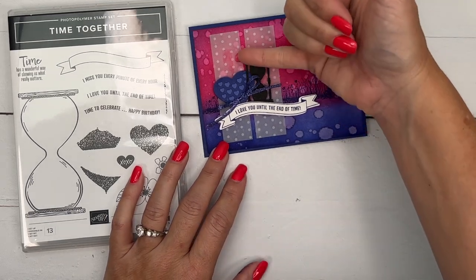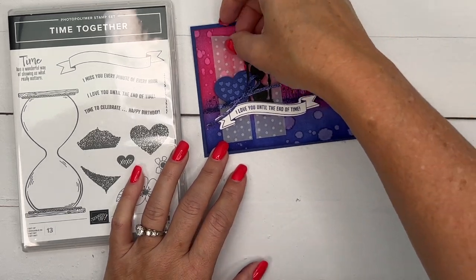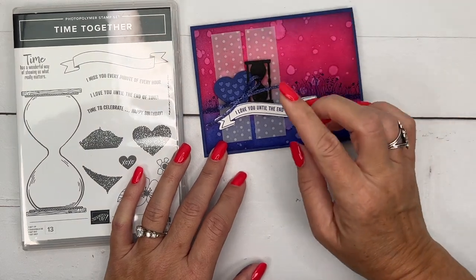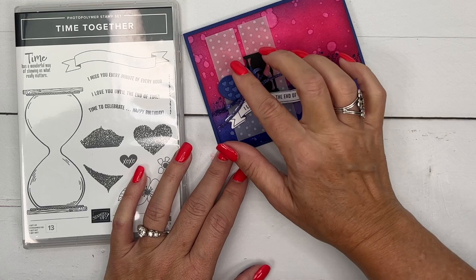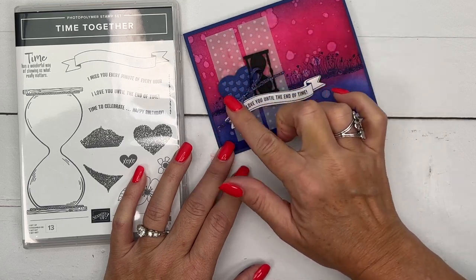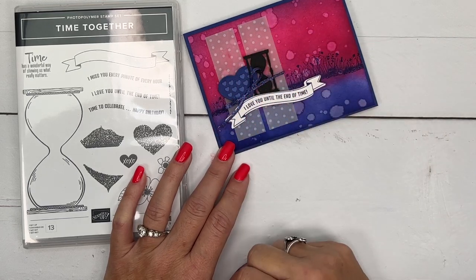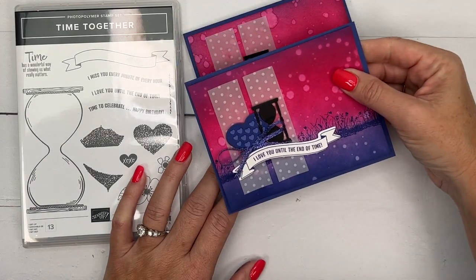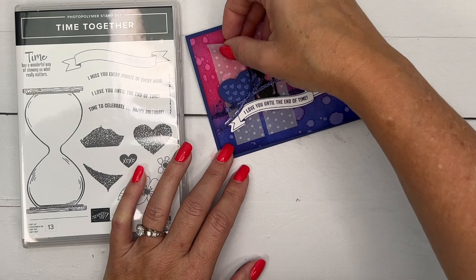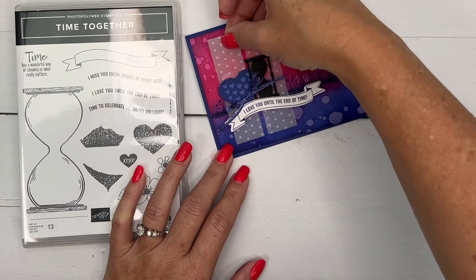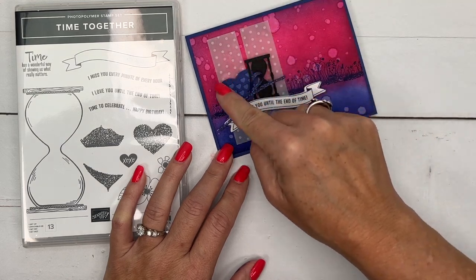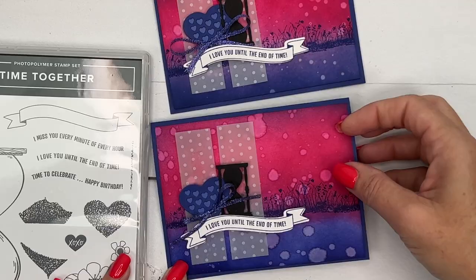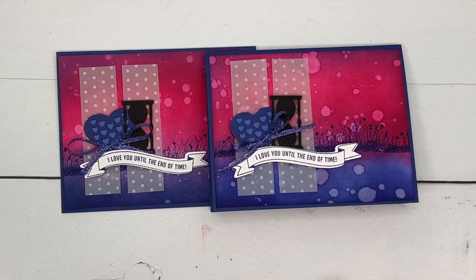One thing I want to point out, I can see my adhesive right there. Sometimes seal, you can see it through if the background is darker. So what I recommend doing is putting the seal here in the middle of your pieces. So it'll be covered up. Sometimes I wasn't thinking over here. So if you have a problem seeing the adhesive through your vellum, just put the adhesive in the middle so that you can cover it up with your beautiful pieces.